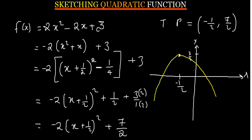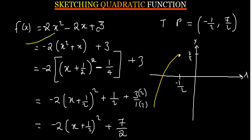To find where the function cuts the y-axis, let x equal 0. All x terms become 0, giving y equals positive 3. So the y-intercept is at (0, 3). The function passes through this point, going downward from the turning point at (negative 1 over 2, 7 over 2).